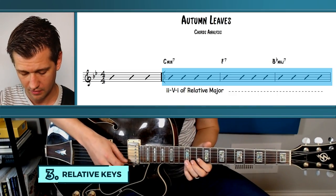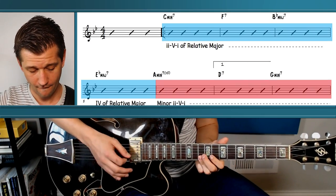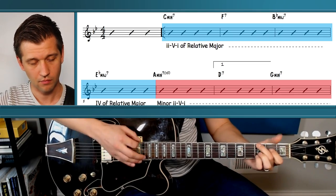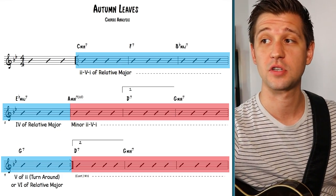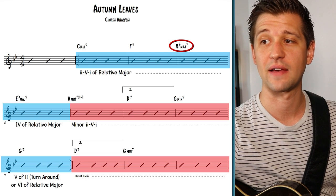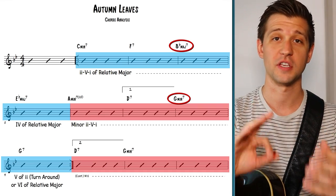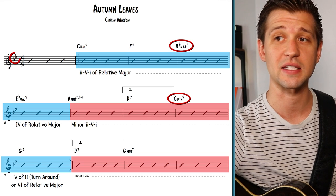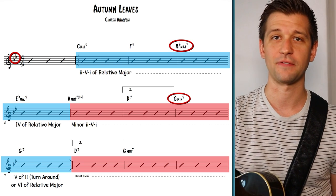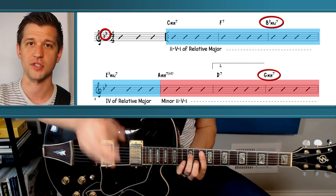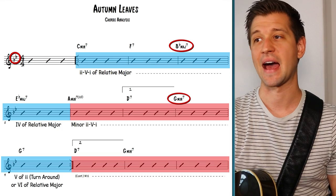The third important music theory concept is what's called relative keys. A great jazz standard example is 'Autumn Leaves.' What we really have going on inside this tune is two key centers: B flat major seven and G minor seven. When we look at the key signature, we have a B flat and an E flat. This tune is actually in the key of G minor — we resolve to G minor throughout the tune and at the end.